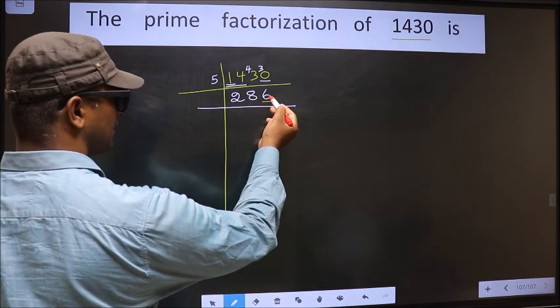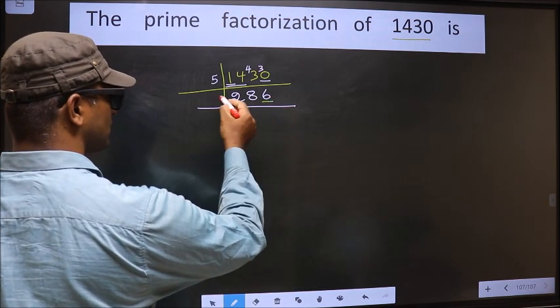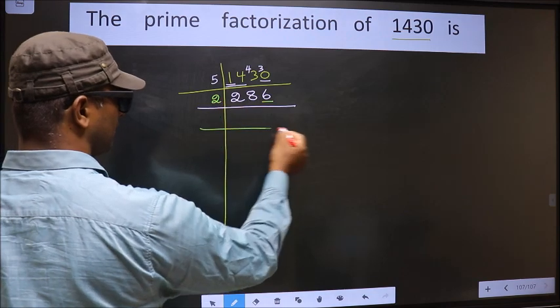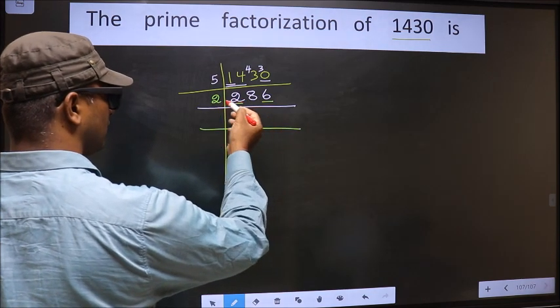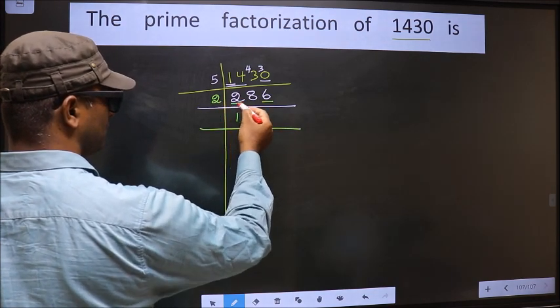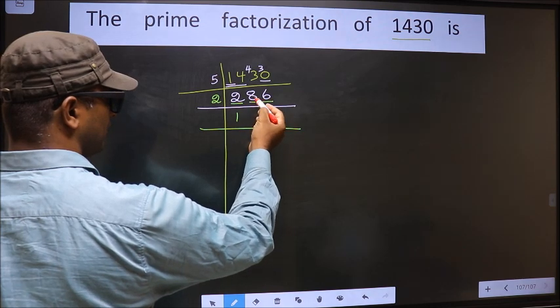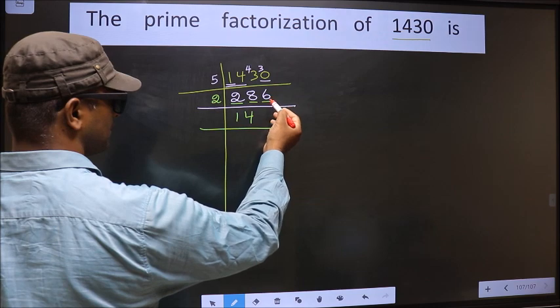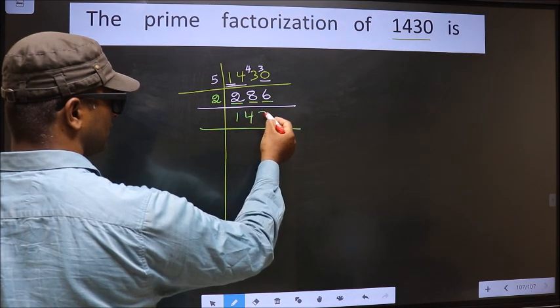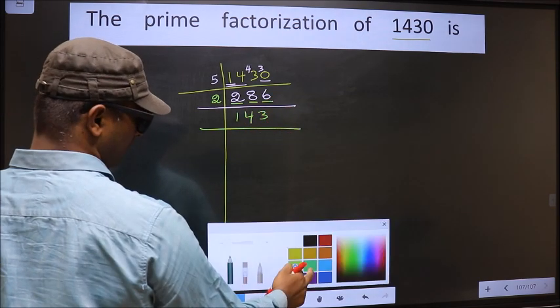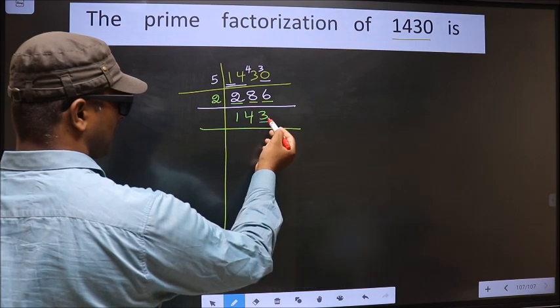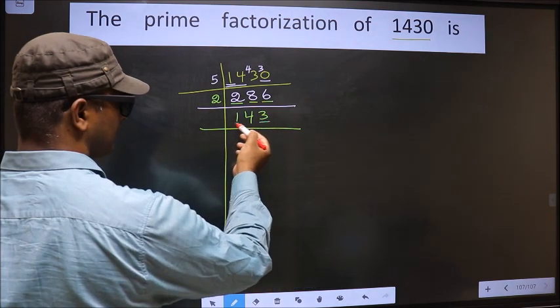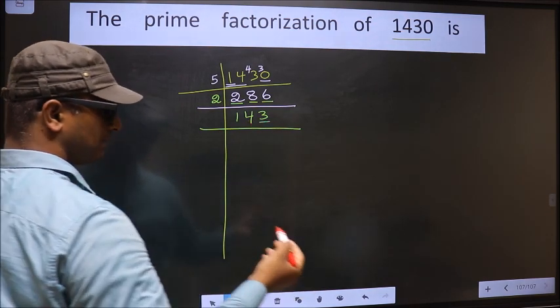For this number, the last digit is 6, which is even, so we take 2 here. The first number is 2. When do we get 2 in 2 table? 2 times 1 is 2. The other number 8. When do we get 8 in 2 table? 2 times 4 is 8. The other number 6. When do we get 6 in 2 table? 2 times 3 is 6. For this number, the last digit is 3, not even, so this number not divisible by 2.